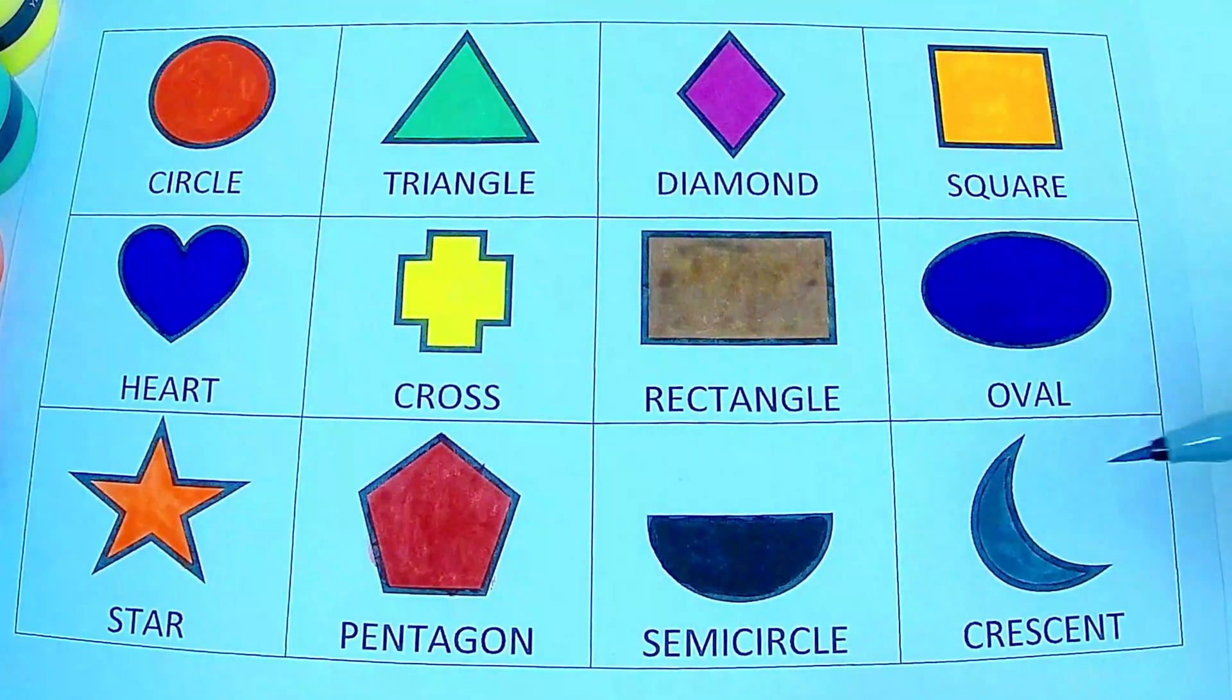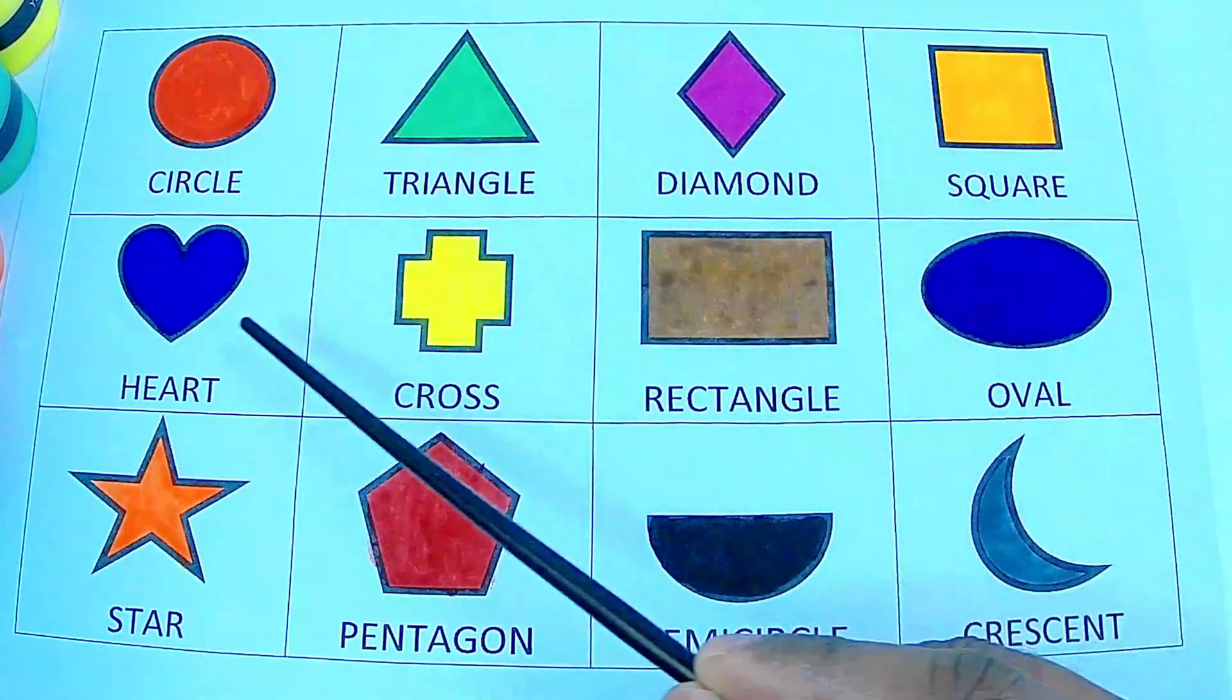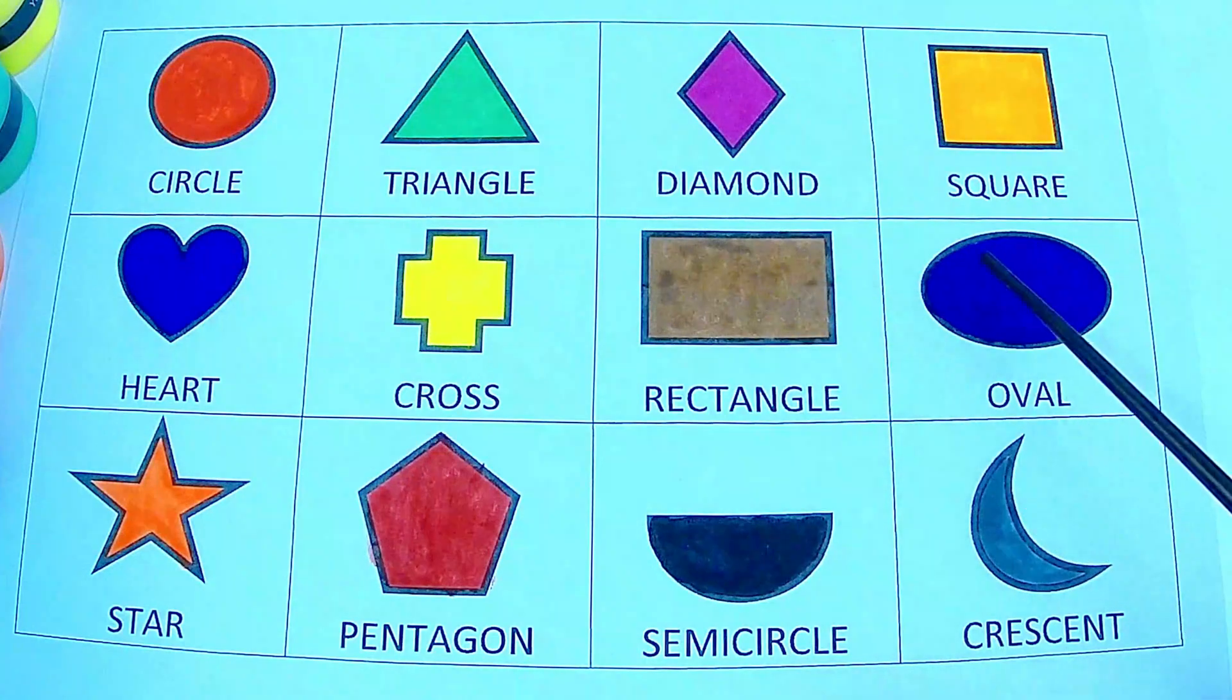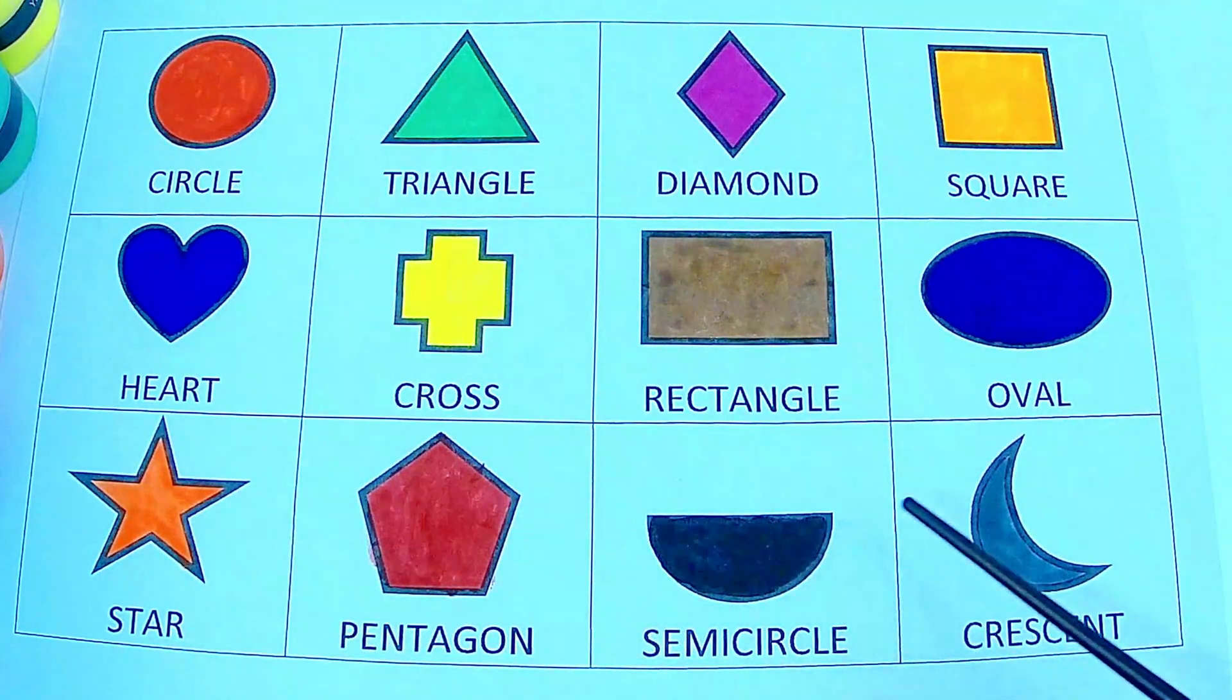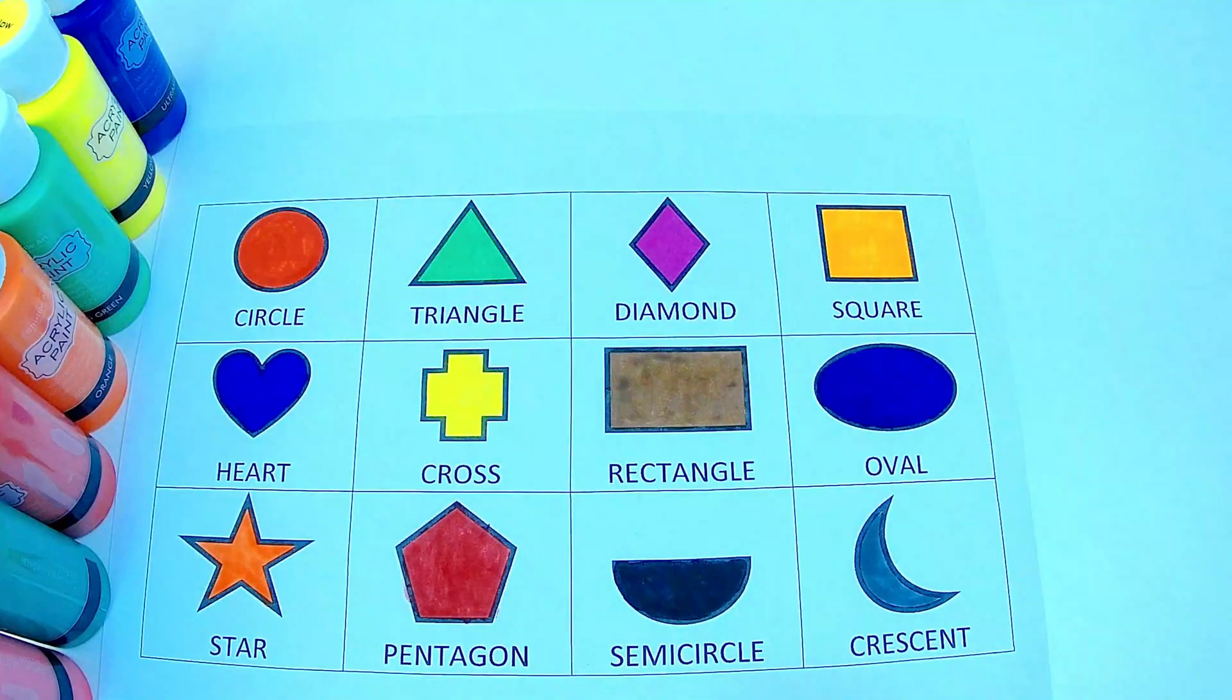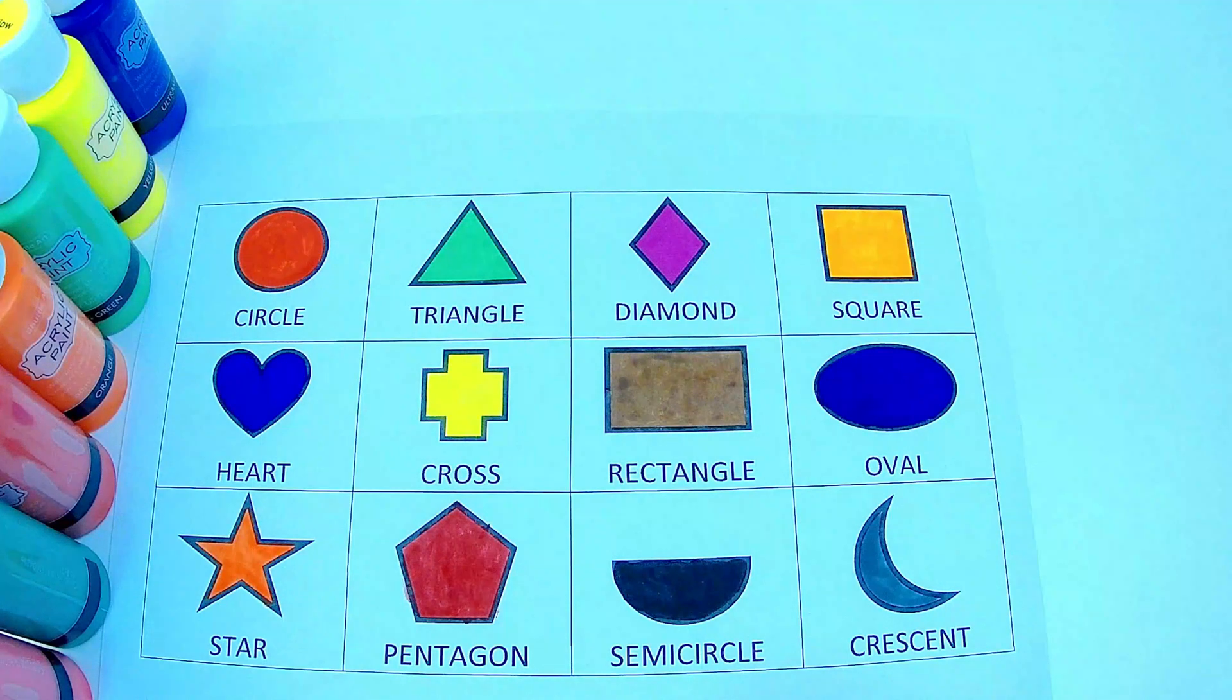Circle, triangle, diamond, square, heart, cross, rectangle, oval, star, pentagon, semicircle, crescent. If you kids like this video please give a thumbs up. For more fun and educational videos subscribe to Blanky Kids World. Bye bye.